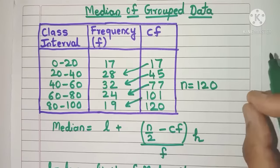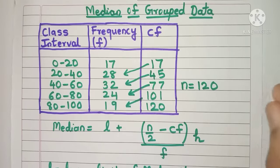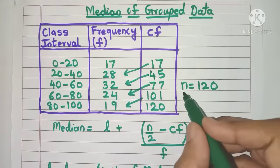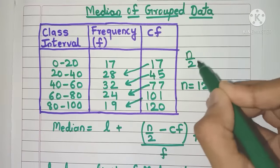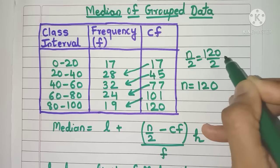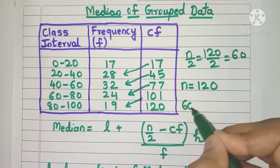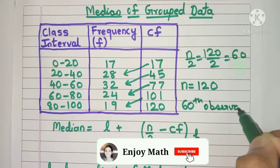Now we need to find where the median value lies. What is the position? For that, we need to divide n by 2, that is 120 by 2, we'll get 60, which means the median lies on the 60th observation.